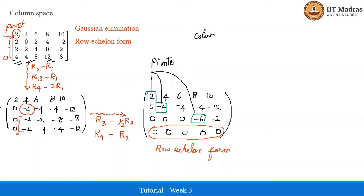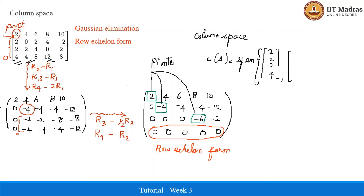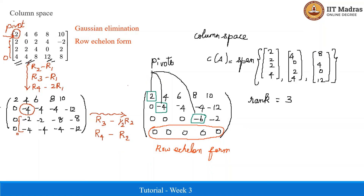The column space of A consists of the 3 columns corresponding to the pivot columns in the original matrix A. Therefore, C of A is the span of the first column (2, 2, 2, 4), the second column (4, 0, 2, 4), and the fourth column (8, 4, 0, 12). The remaining columns — third and fifth — are linear combinations of these three. The rank of matrix A is simply the number of pivot elements, which equals 3, and this is also the dimension of the column space.